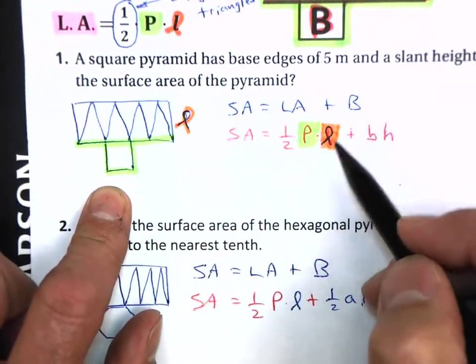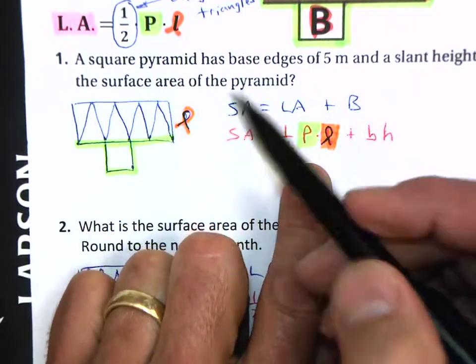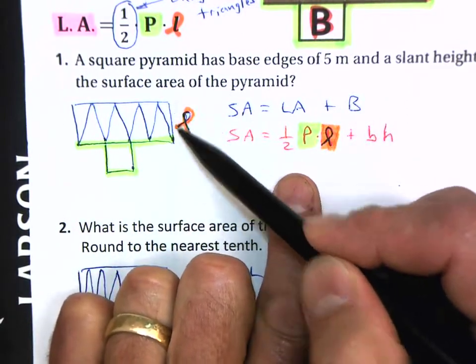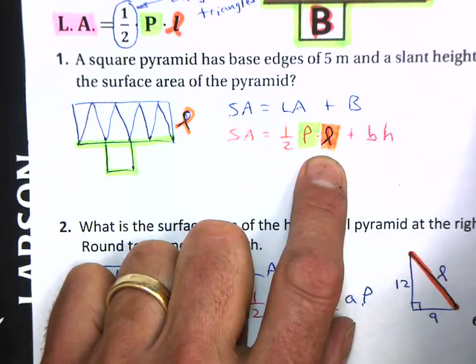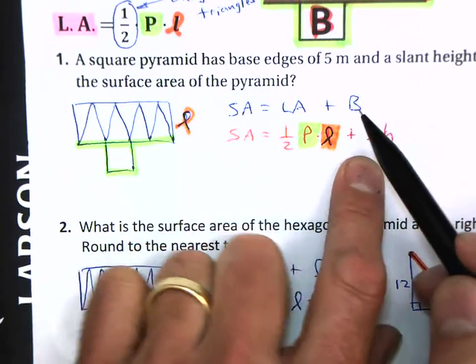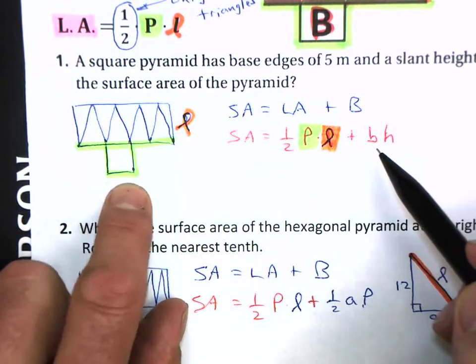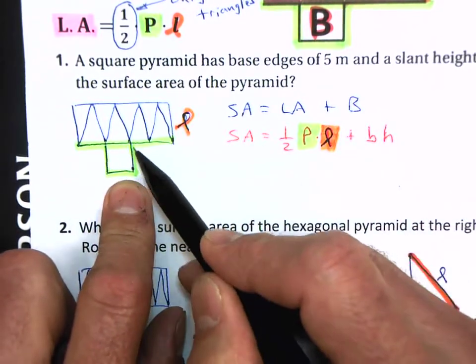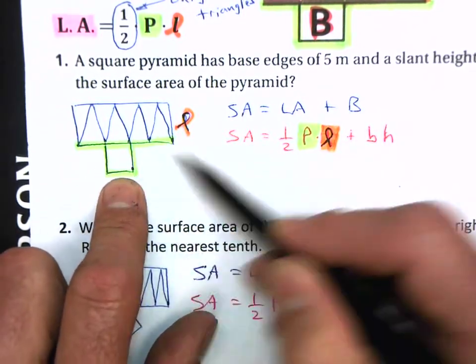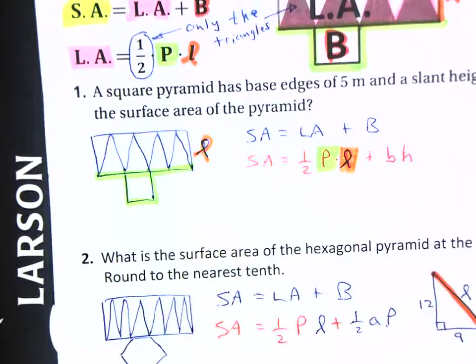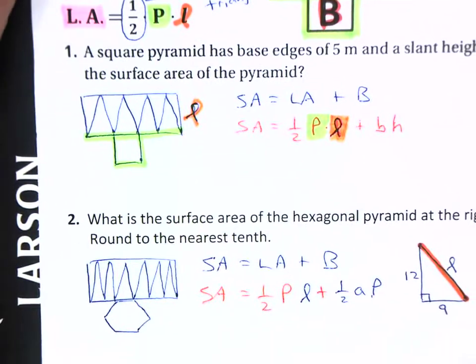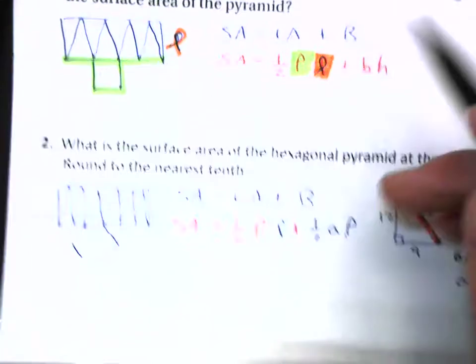So you have to add up going around this base. And then you want to multiply that times your slant height. And then remember the area of the big base is the base and the height of the base. These two dimensions here are what gets plugged in for that. So go ahead and pause the video, plug in your numbers, and calculate that carefully with your calculator.